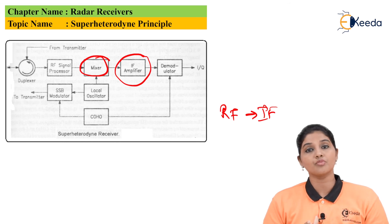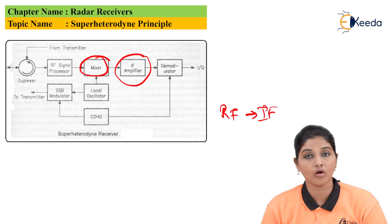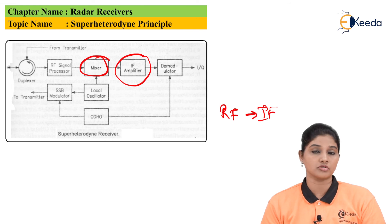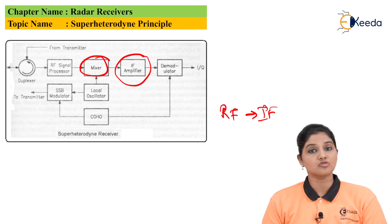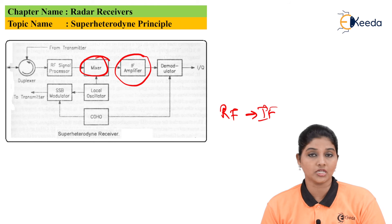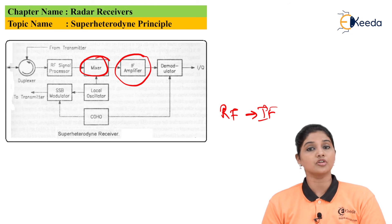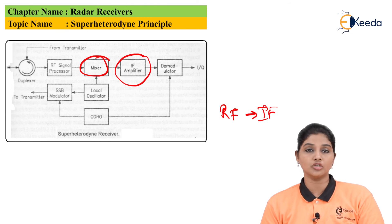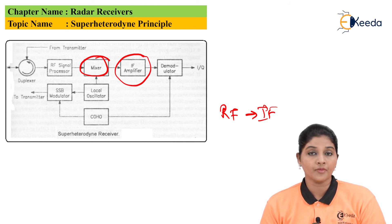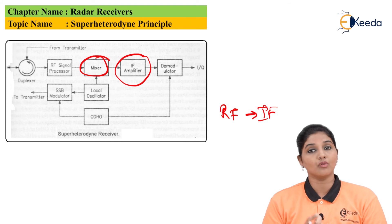This is how the super heterodyne block diagram works in the radar receiver. Since the super heterodyne receiver fulfills all the requirements of the application, it is the most commonly used type of receiver in radar systems.